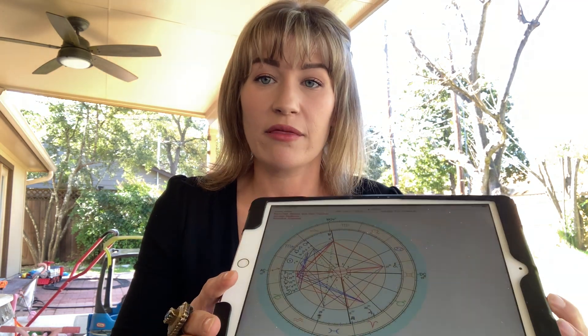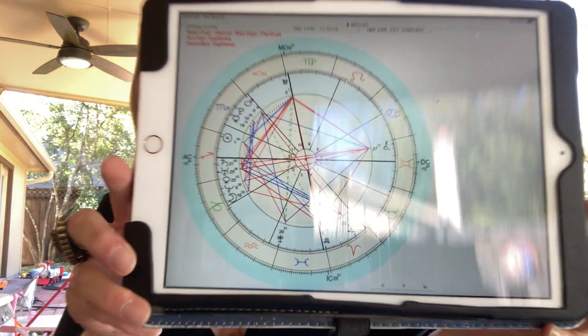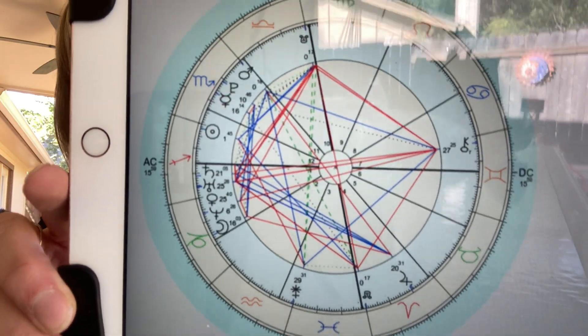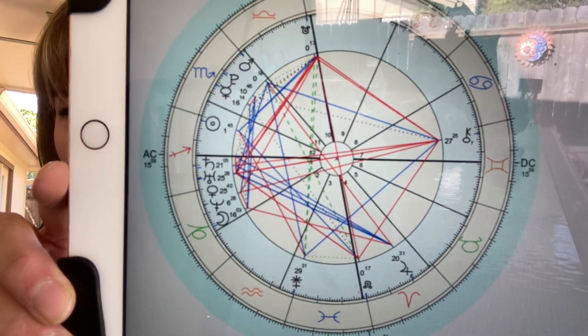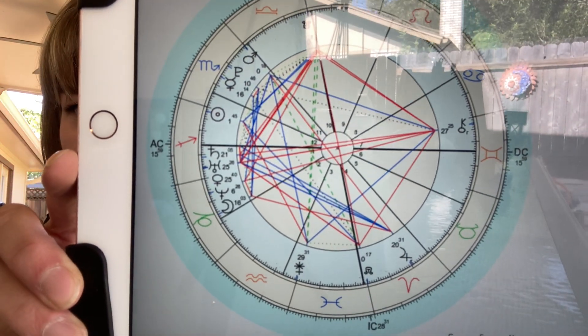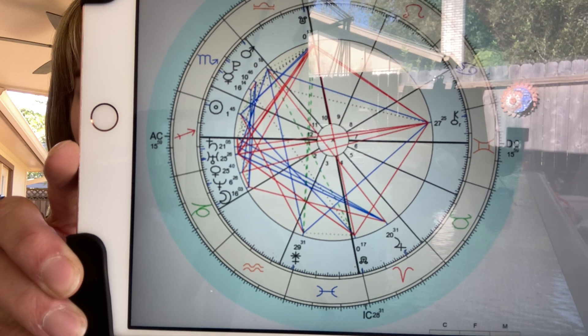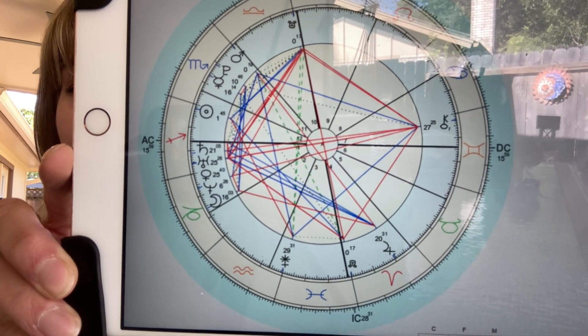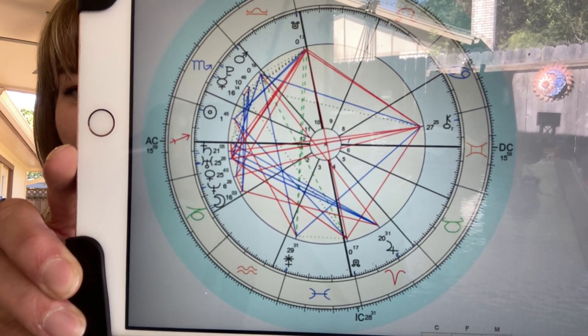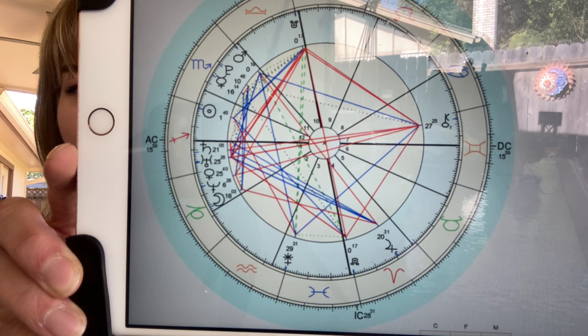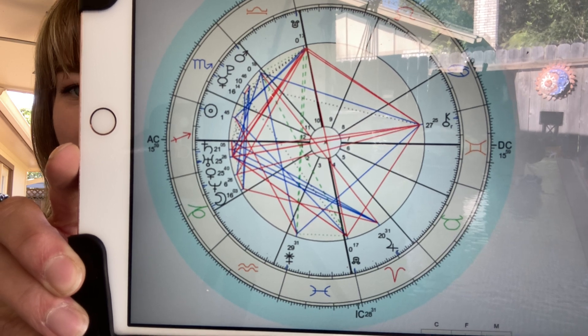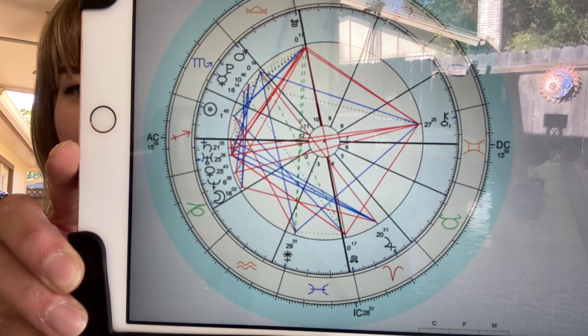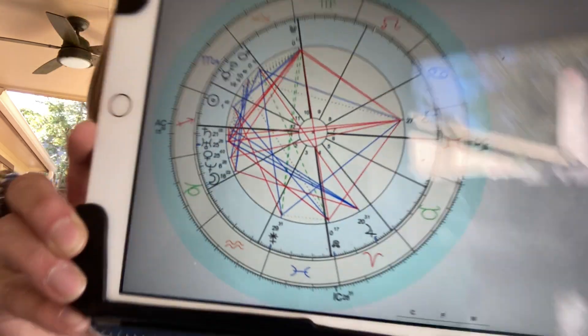I'll show you on my chart, just because I have the authority to show my chart and the clearance. So down there in the third house in Aquarius at 29 degrees, you'll see the little thing that looks like an asterisk with a cross. That's Juno.